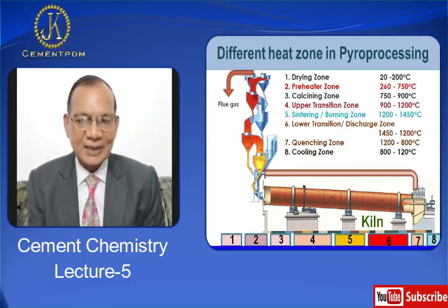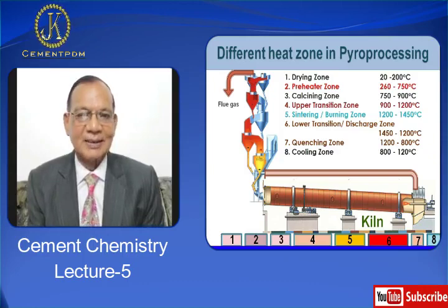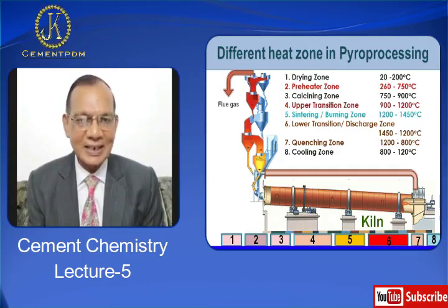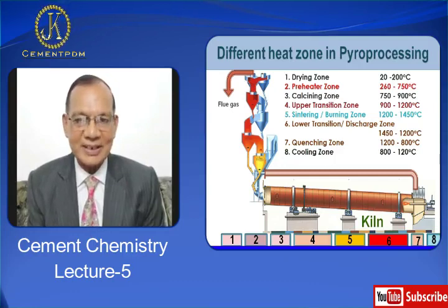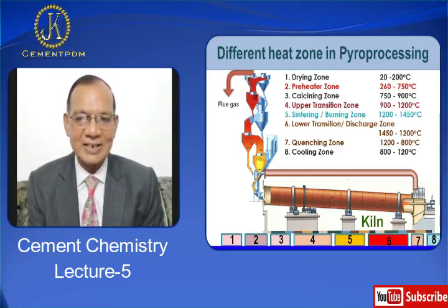There are a number of zones — about 8 zones. Number one is the drying zone, where the temperature is 20 to 200 degrees centigrade. Second is the pre-heater zone, where the temperature is 260 to 750 degrees centigrade. Third is the calcining zone, where the temperature ranges from 750 to 900 degrees centigrade.